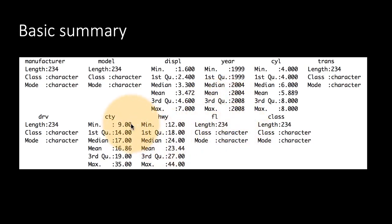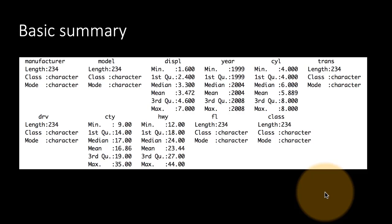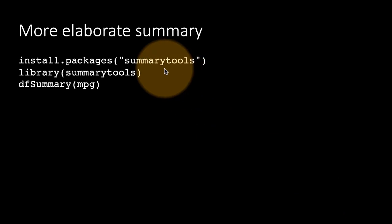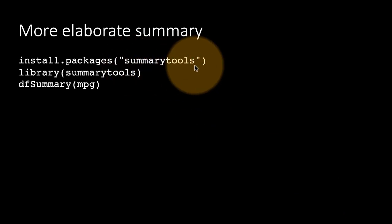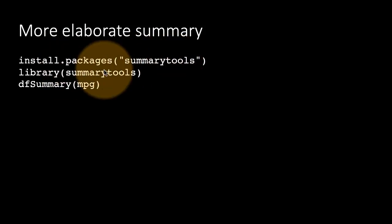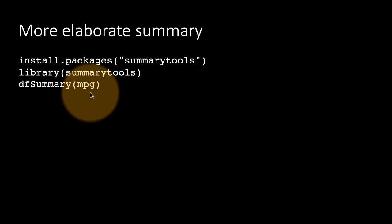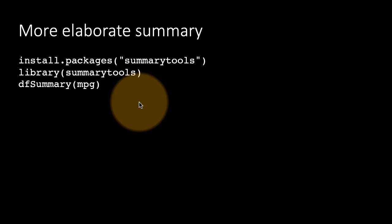If it is a factor, what you are going to get is a break-up of how many values of each factor level are there in the data. And if it is a character, it is just going to give you basic information. There is also a tool that provides a more fancy summary with a lot more information — that package is called summarytools. You install it with install.packages('summarytools'), load it with library(summarytools), and then use the function dfSummary, with S uppercase, giving the data frame you want summarized. You get a much more detailed summary that is more useful than the default summary command.